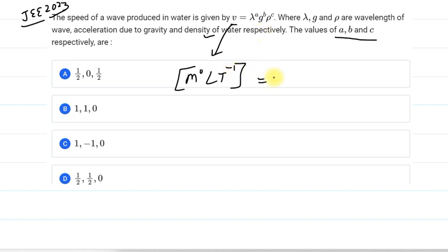And then on the other side, we have lambda. Lambda is simply a length. So we will put lambda L raised to power A. And then other one is acceleration due to gravity. So it is simply acceleration. It is written as LT^-2 raised to power B.